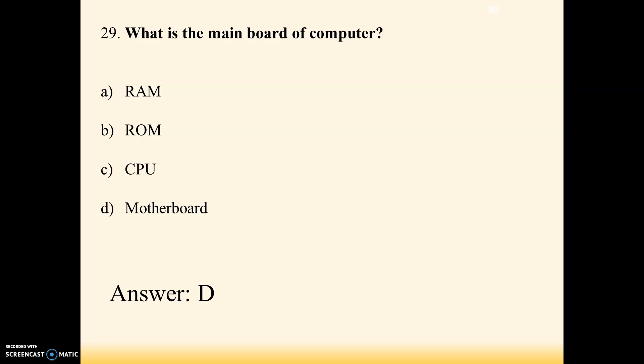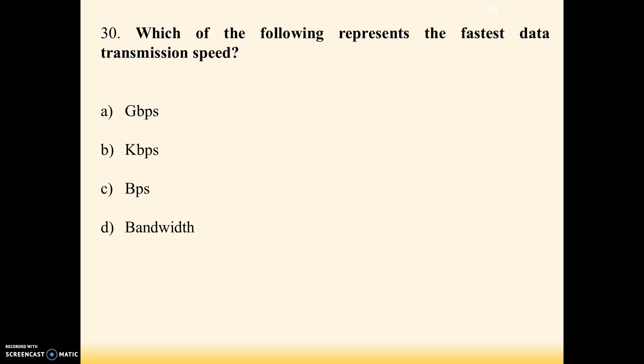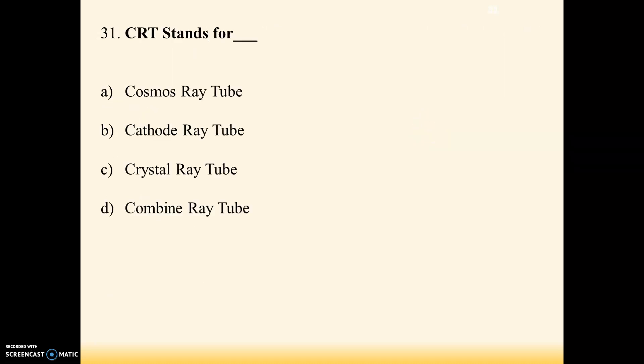Next question: what is the main board of a computer? Options are RAM, ROM, CPU, motherboard. Option D is correct — motherboard is the main board of the computer. Next: which of the following represents the fastest data transmission speed? Options are GBps, KBps, Bps, bandwidth. Answer is GBps — option A is the right answer.